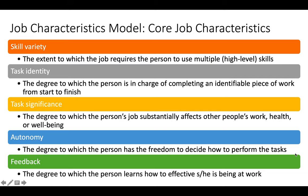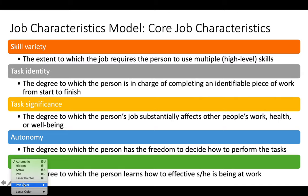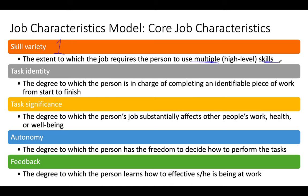Here are the five job characteristics. The first is skill variety — the extent to which the job requires the person to use multiple skills. In job specialization, one skill is typically used. But in job rotation or job enrichment, you have to use a multitude of different skills. The more skills you get to apply on the job, the more satisfactory and motivational it is.